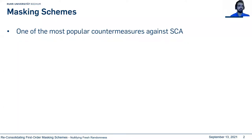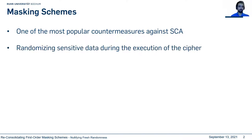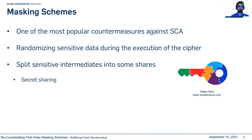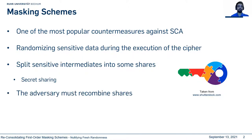Masking schemes are one of the most popular countermeasures against side-channel analysis, which is based on randomizing sensitive data during the execution of the cipher. In masking schemes, we usually divide the sensitive variable into some shares, which forces the adversary to recombine the shares to recover the key.